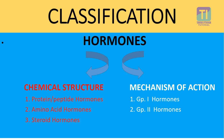The next method of classification is on the basis of mechanism of action. They are classified into two groups. Group one hormones are those that have intracellular or intranuclear receptors, meaning they are lipophilic in nature. Group two hormones are those that have cell surface receptors, meaning they are hydrophilic in nature.